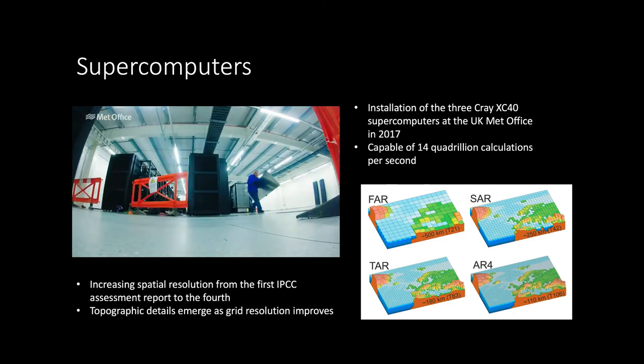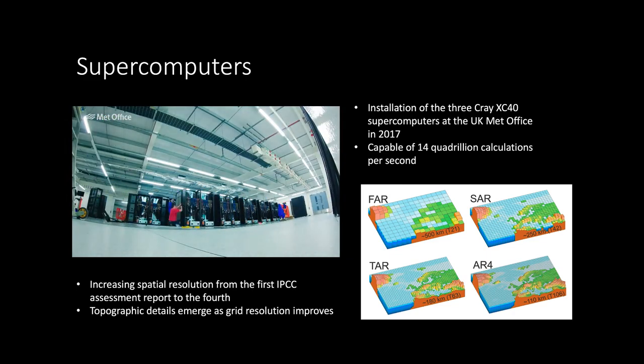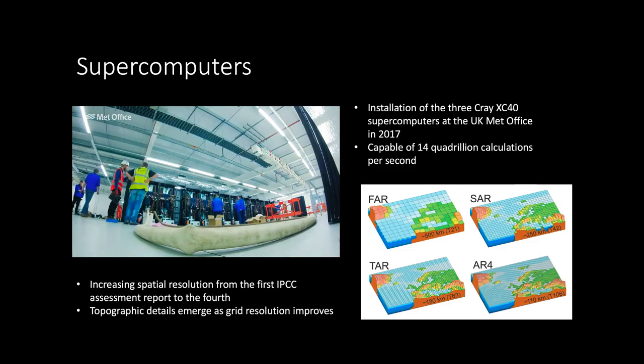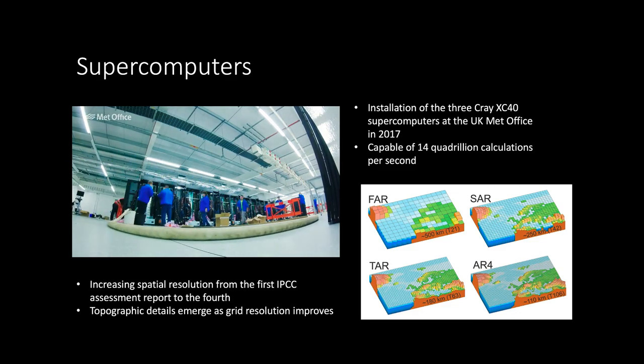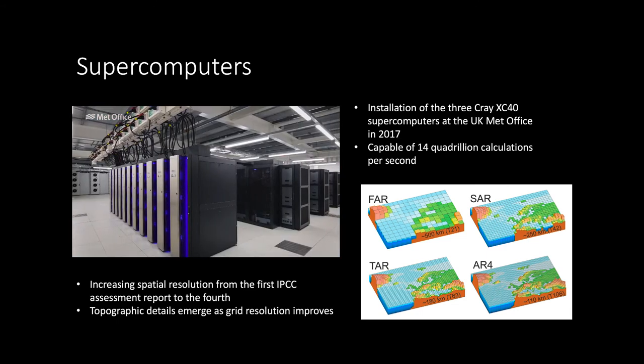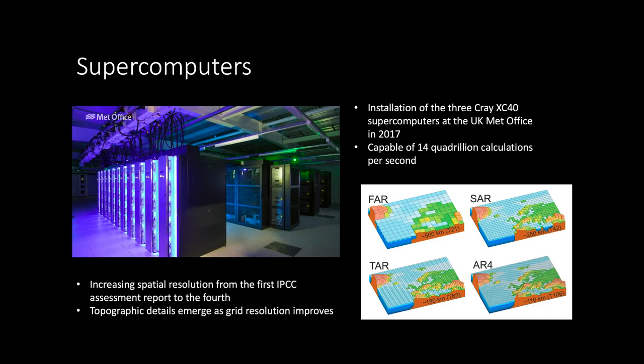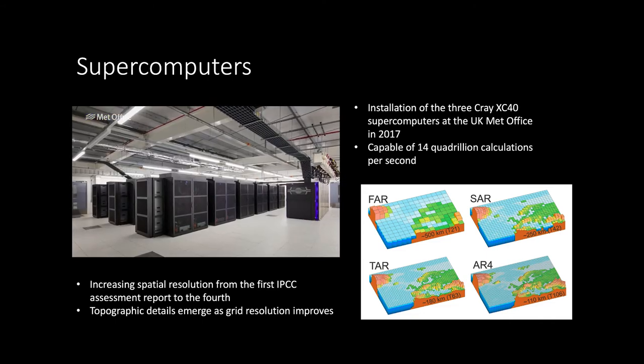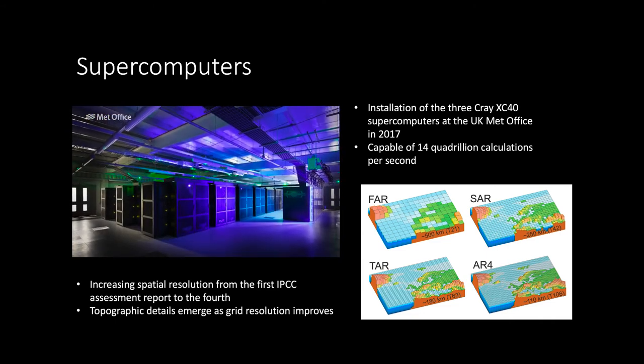For example, the topography will be averaged across the whole grid cell in the model, meaning it potentially overlooks the detail of any physical features such as mountains and valleys. Similarly, clouds can form and dissipate at scales that are very much smaller than a grid cell.